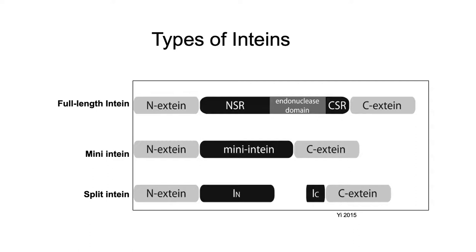The N- and C-terminals of the split intine could be tens of thousands of base pairs apart. You can imagine how baroque this process is — we have these genes that are non-functional to the host cell, transcribed separately and translated separately. Then these non-functioning peptide chains have to travel through the cytoplasm until the intines can link up, combine, excise themselves, and connect the two host proteins, giving the native mature functional host protein.